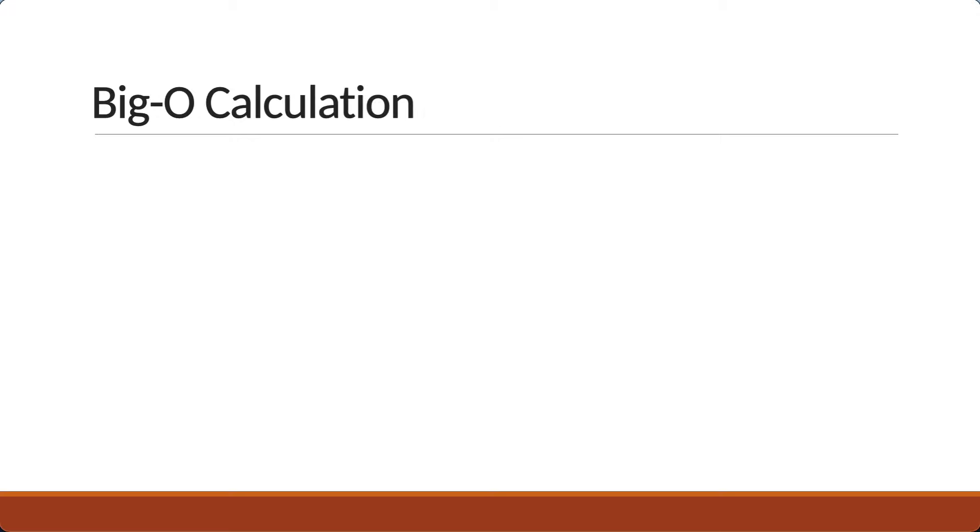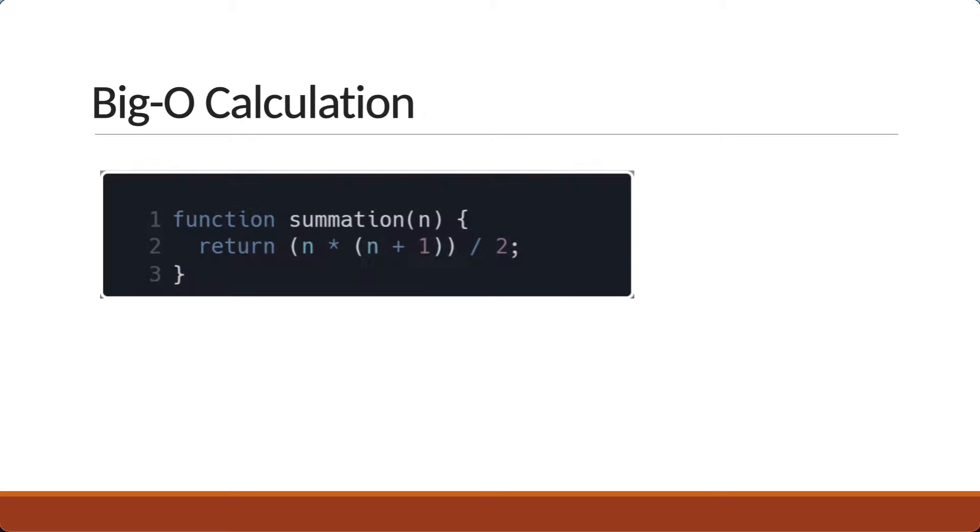Here is another algorithm for the same problem: summation of first n natural numbers. The time complexity of this algorithm is O of 1, which is called constant time complexity. Irrespective of what the value of n is, line 2 is executed only once. Once you get the hang of it, it becomes easier to analyze the time complexity.